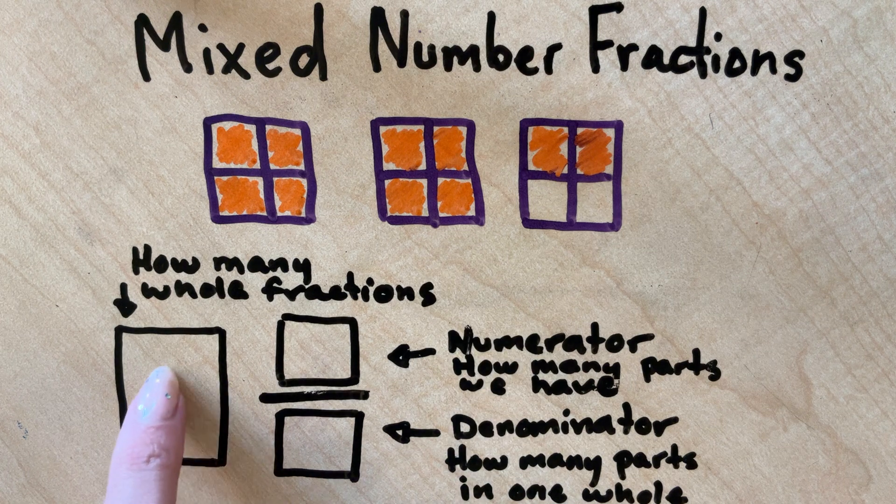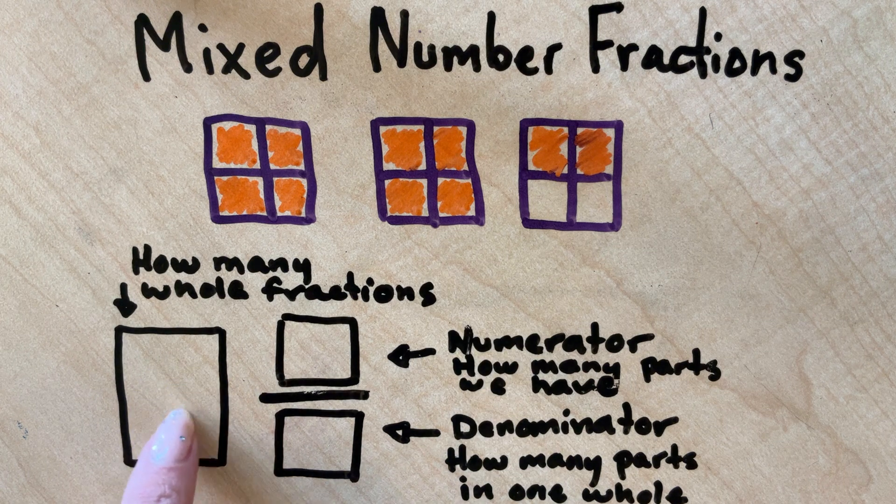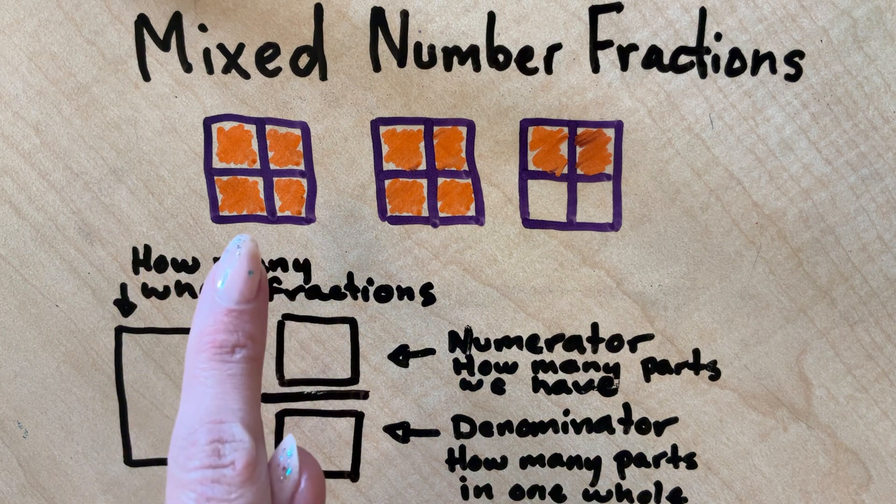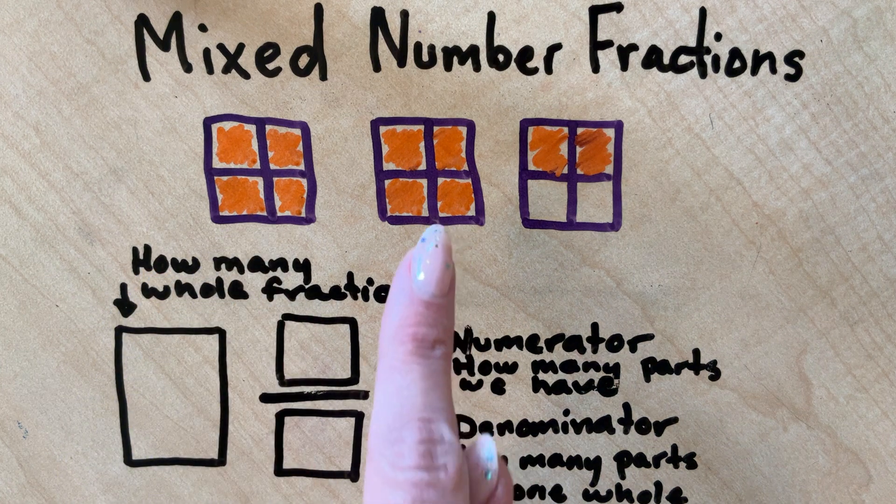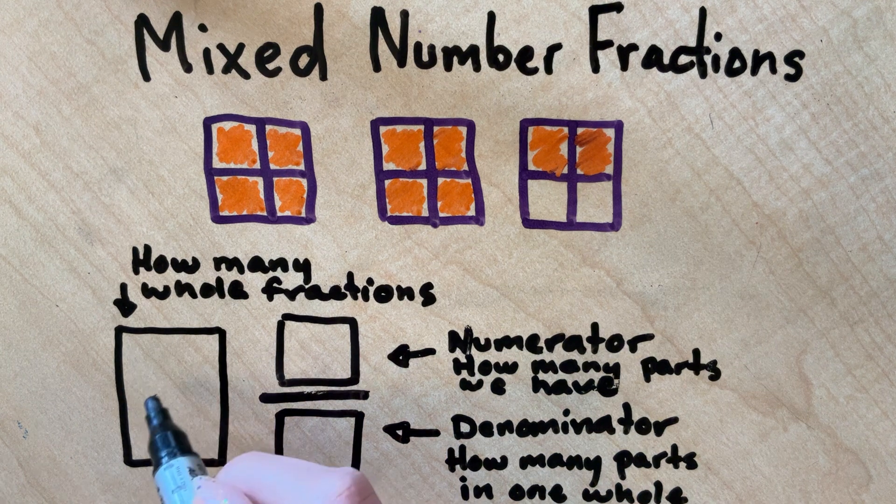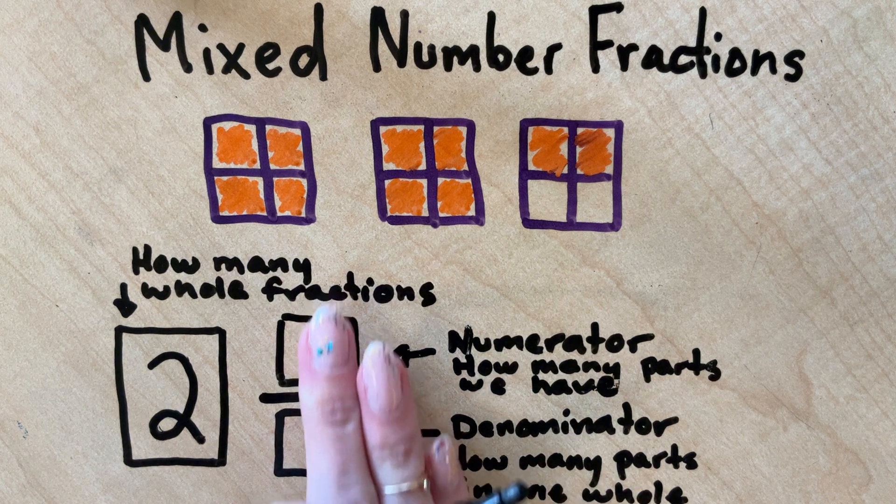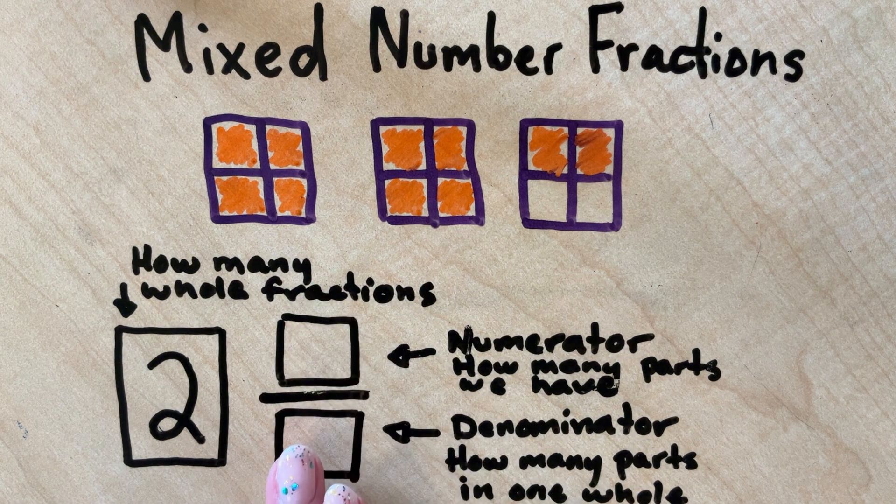So when I want to think about what number I'm going to put here, this number is how many whole fractions I have. I have one whole fraction, I have two whole fractions. So the number that I'm going to put into this box is a two. And notice that that two is about the same size as the fraction that sits next to it.